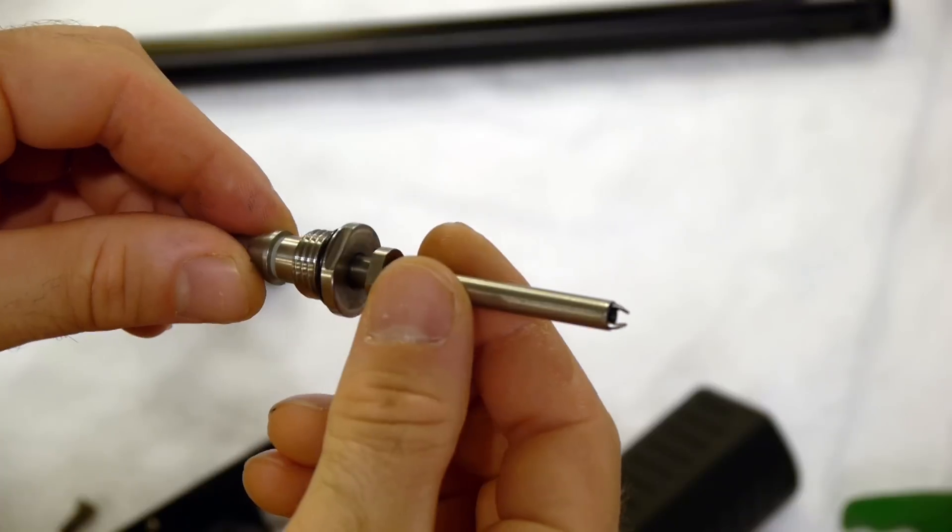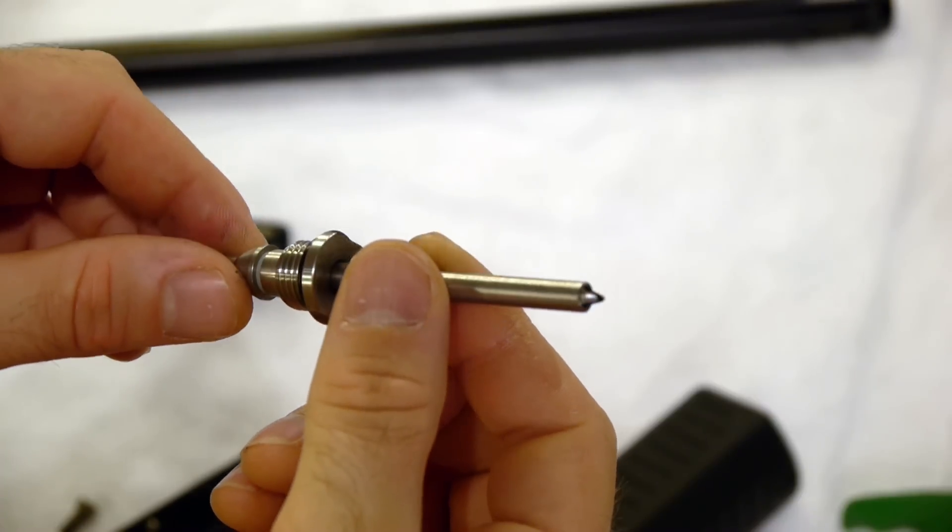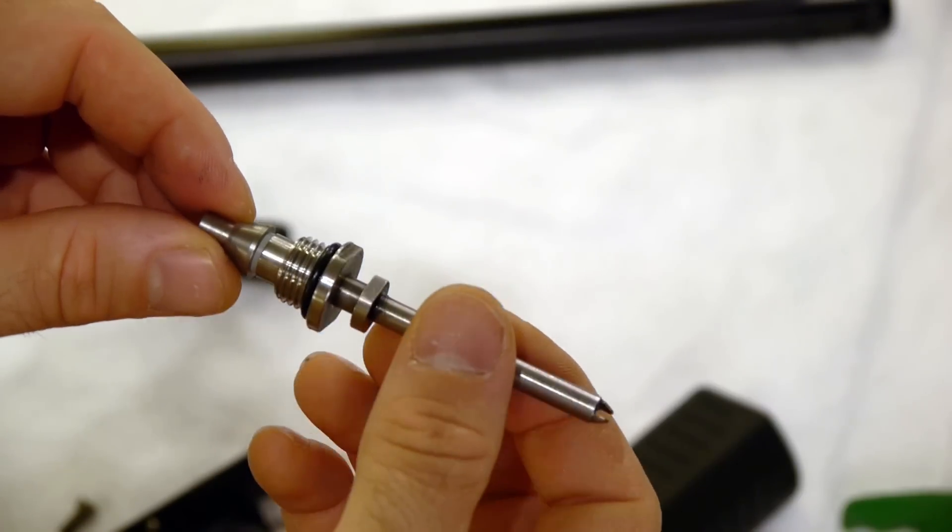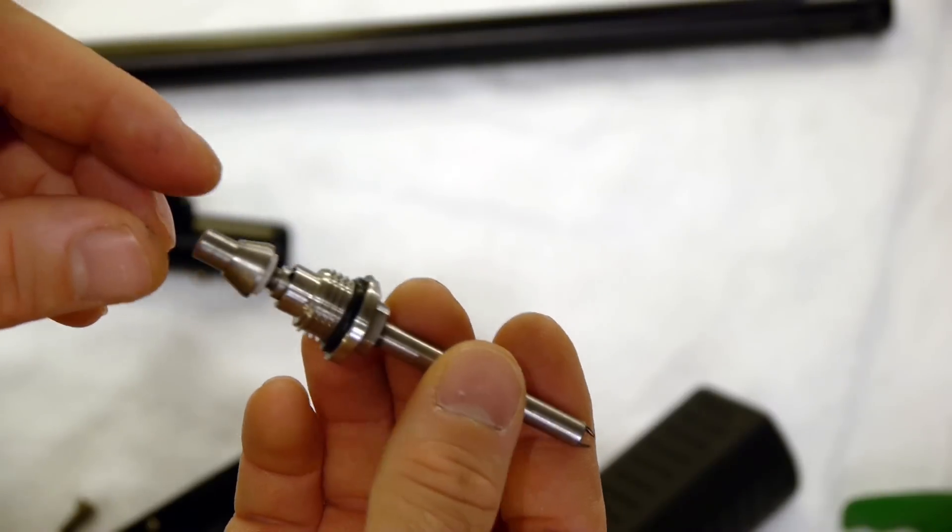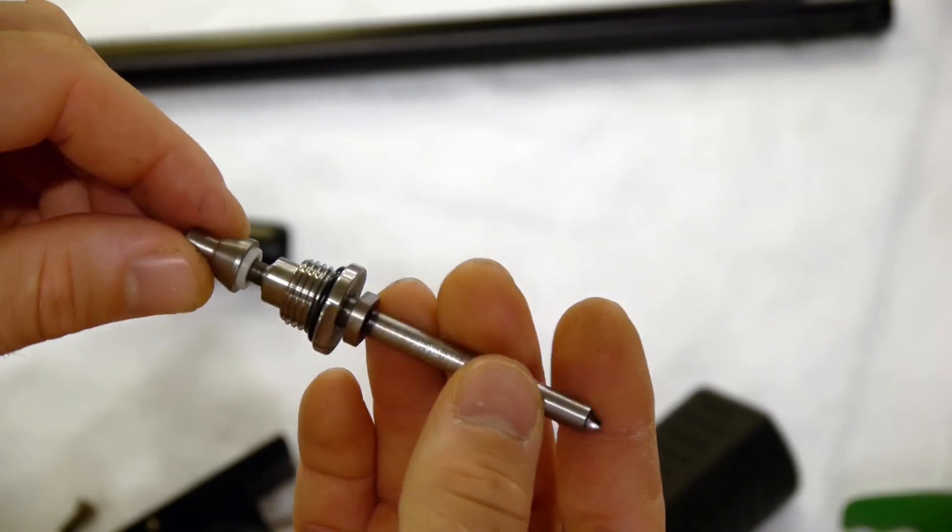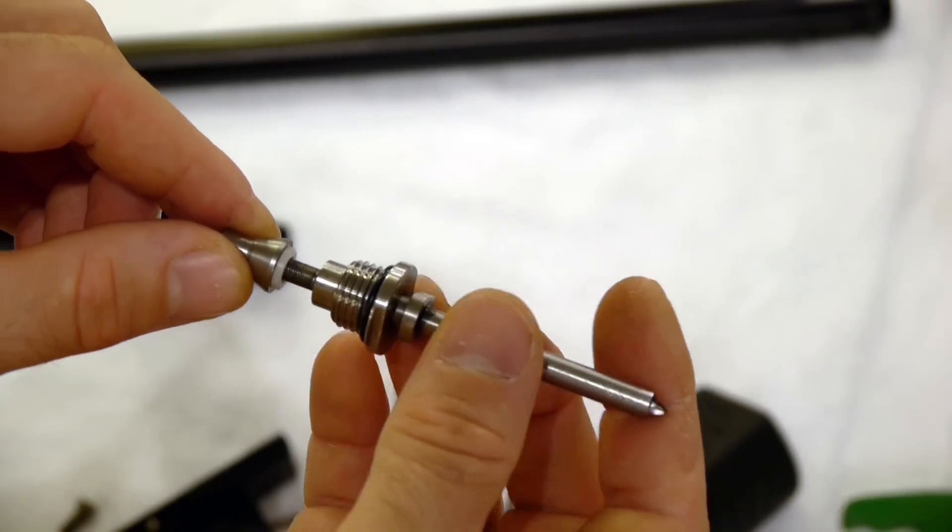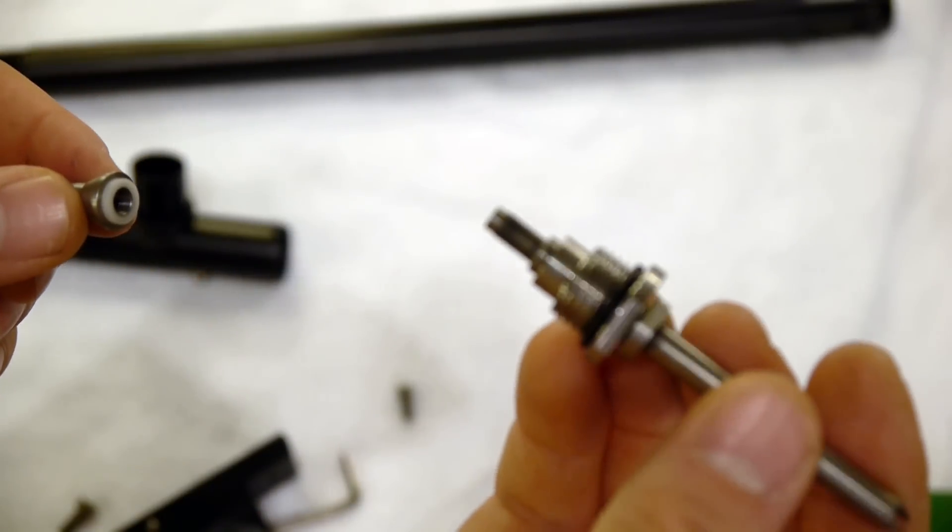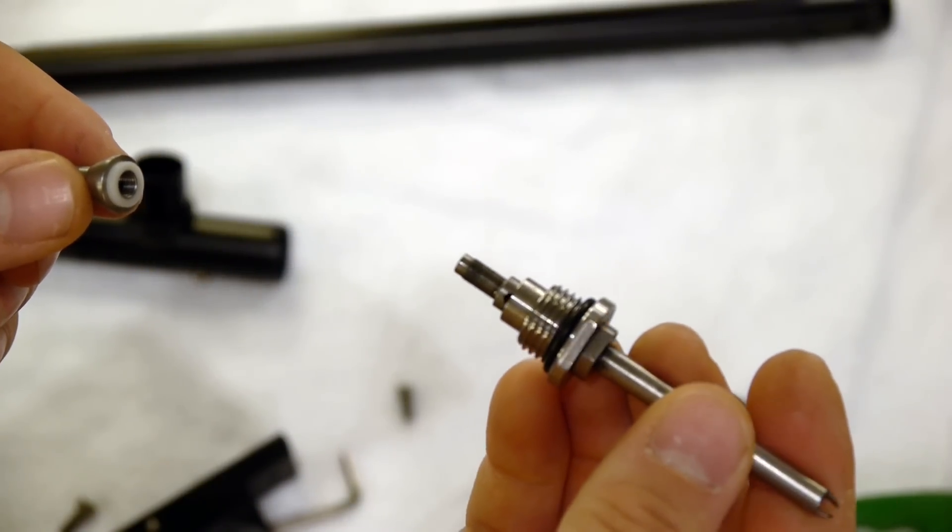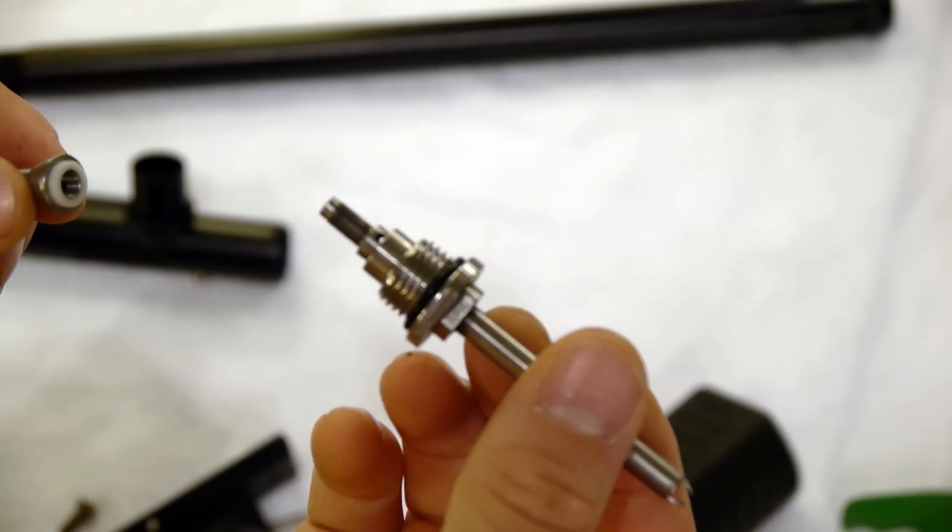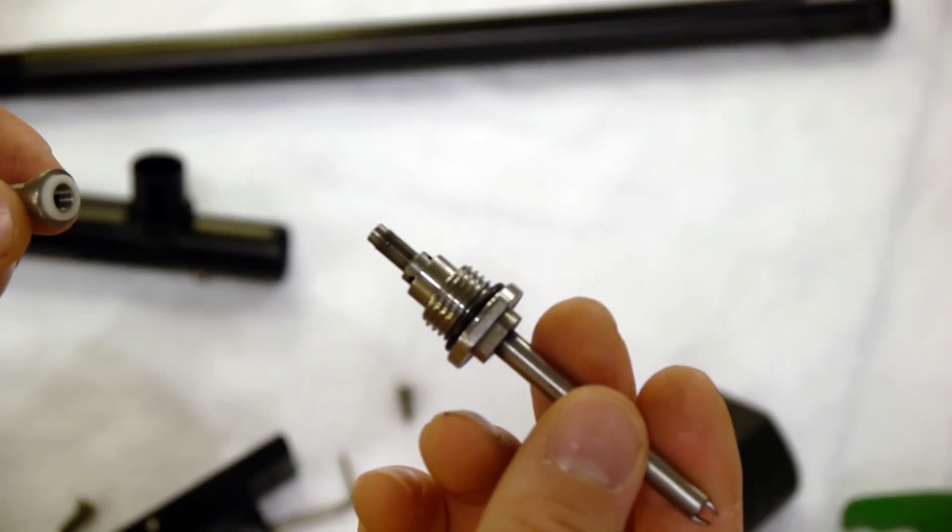We can see the claw-style end of it - I don't know how else to describe that. We can also see the cone-style power tube cup seal assembly that it uses. Unscrewing the power tube from the cup seal assembly, we can see the very fine threads that it's held on by - definitely metric threads, very fine.